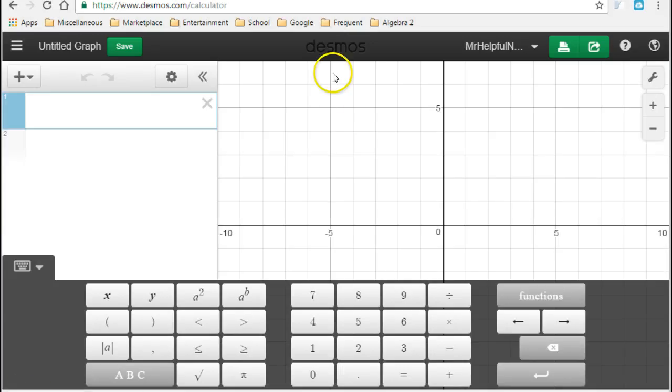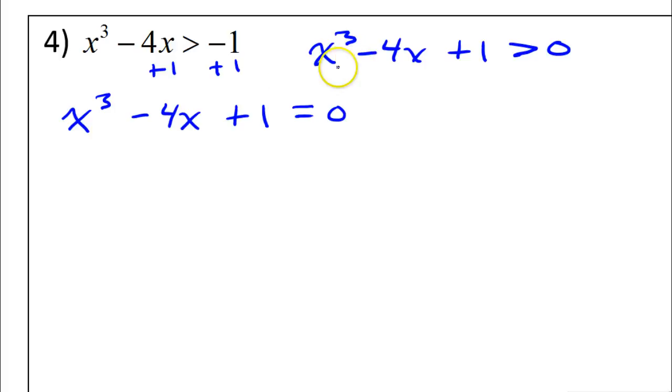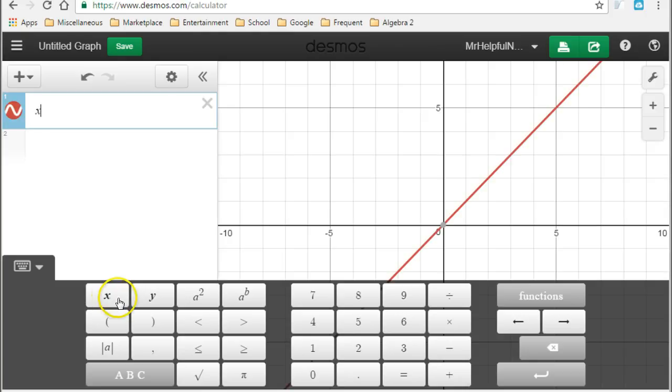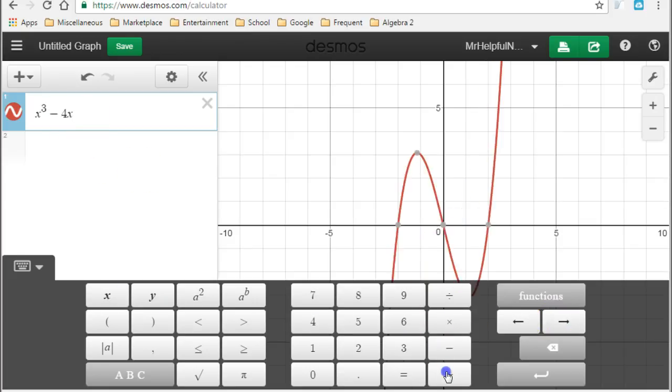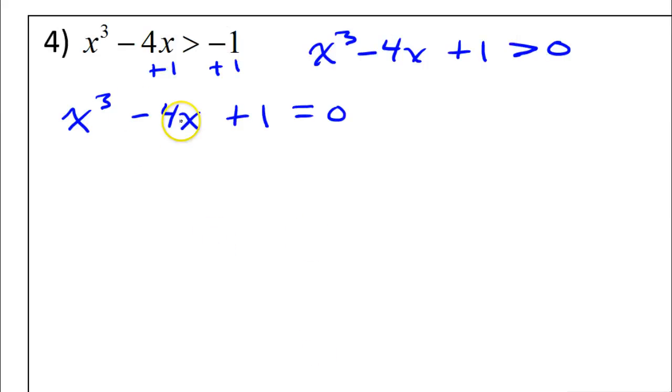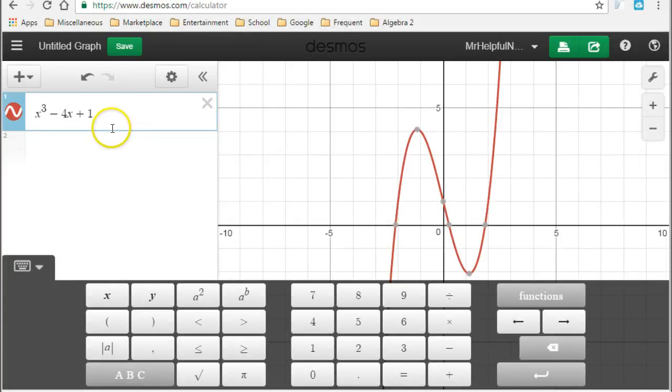My favorite graphing software is Desmos.com. You can either just go to Desmos.com, the website, or if you're using your phone or other device, there's an app. A Desmos app. So, I'm just going to type in the equation. X to the third power minus four X plus one. I've got X and I want to go to the third power. So, minus four X plus one. X to the third power minus four X plus one. Just double checking because sometimes I forget. So, there is our function.